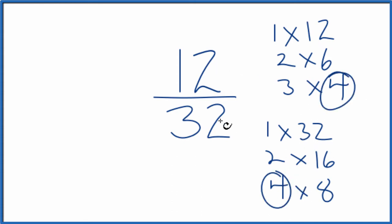So divide 12 by 4 and 32 by 4, and we'll have simplified the fraction 12 32nds. Let's move these over here.